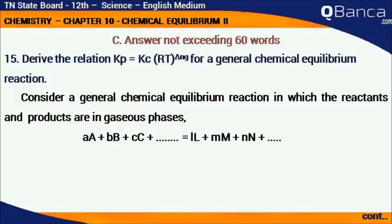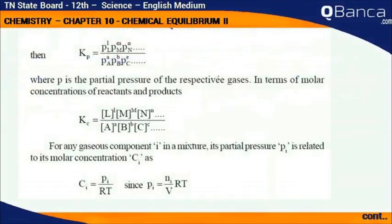Then Kp equals pL to the power l times pM to the power m times pN to the power n etc. divided by pA to the power a times pB to the power b times pC to the power c etc., where p is the partial pressure of the respective gases.